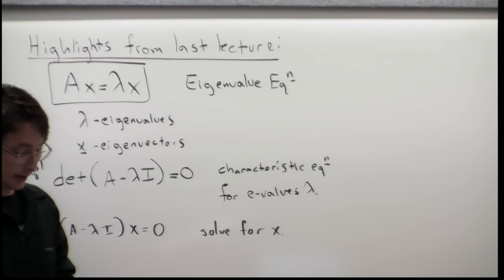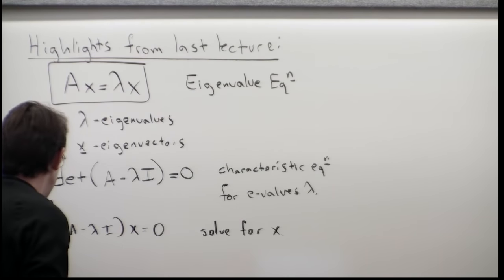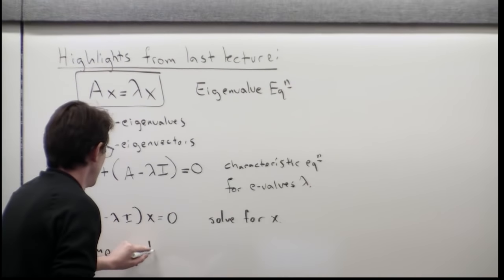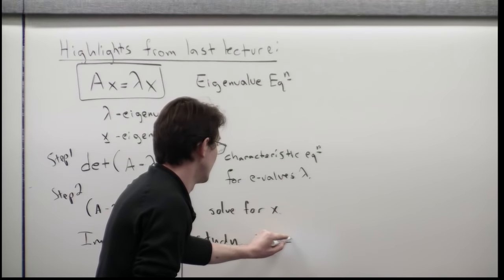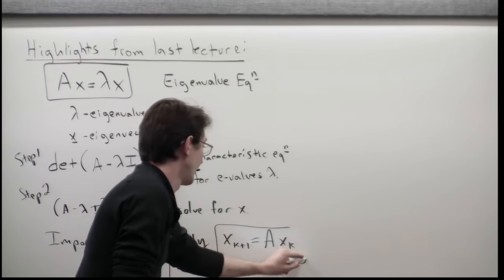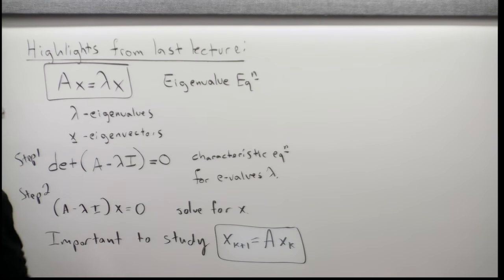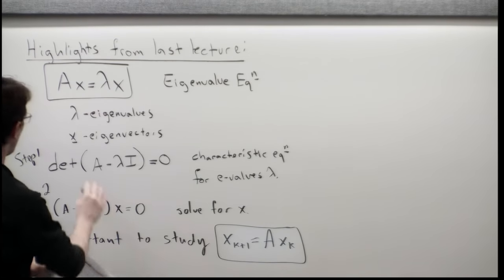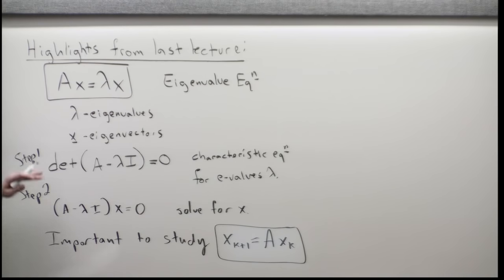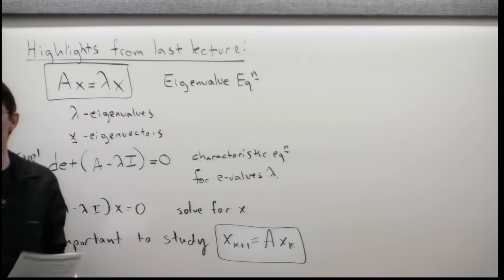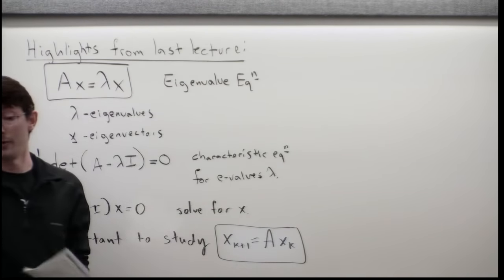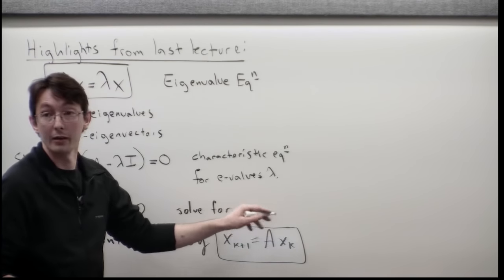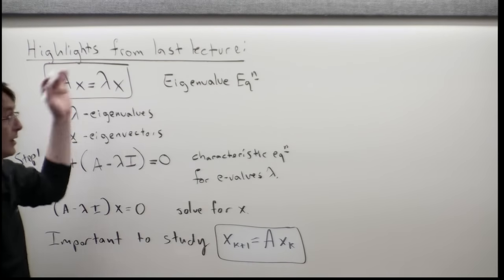It is very important to study systems of the form x_{k+1} equals matrix A times x_k. Lambda are eigenvalues, x are eigenvectors, and there's a two-step process: we first solve for eigenvalues, then we solve for eigenvectors. This tells us a lot about the behavior of x as it is iterated by multiplying through the matrix A — specifically, if I multiply x by A many times, do the values get big or small? The eigenvalues tell us about that.